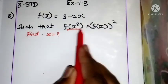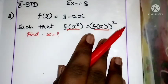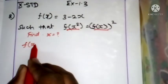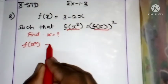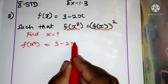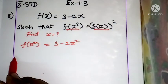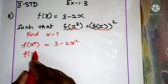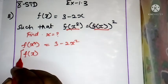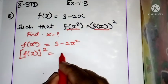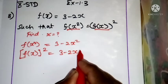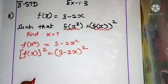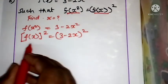First, f(x²) is equal to 3 minus 2x², and [f(x)]² is the whole square. So 3 minus 2x, the whole square. Now let's expand that whole square directly.